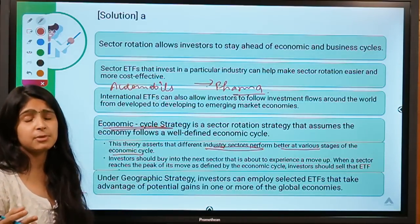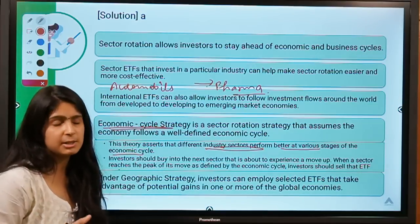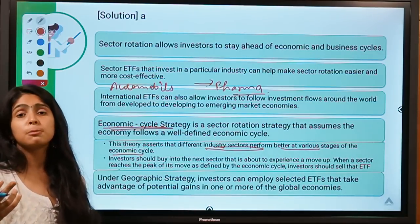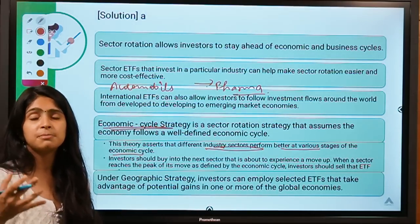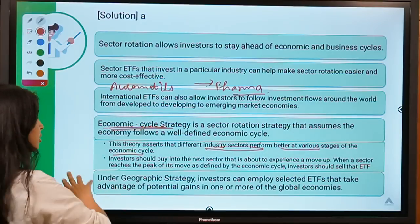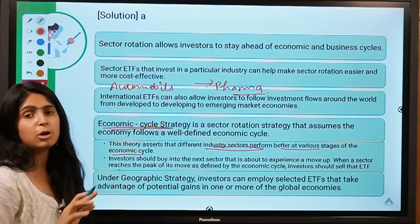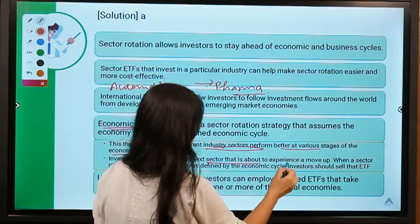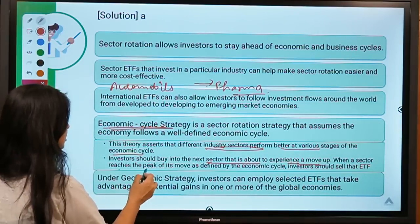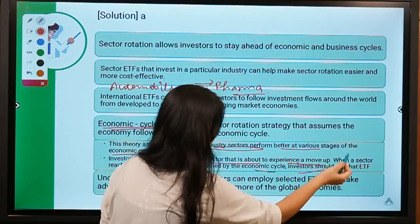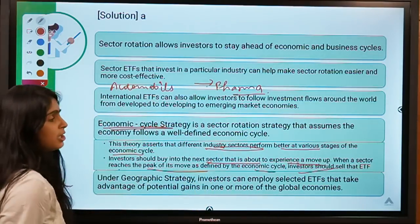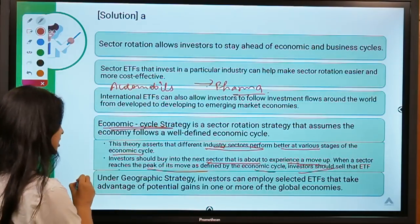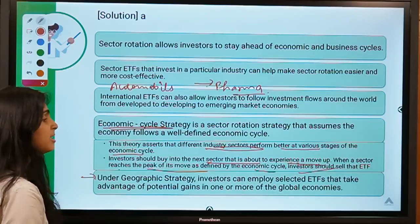For example, if economists are expecting a boom, it's good to put money into construction companies as they'll witness huge revenues. Investors should buy into the next sector about to move up, and when that sector reaches its peak as defined by the economic cycle, investors should sell that ETF. There is also a geographical strategy where investors put money into various economies of the world that are performing well.